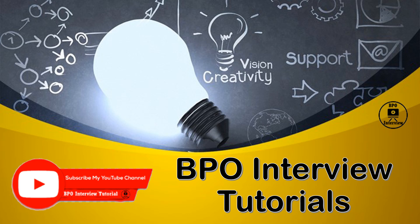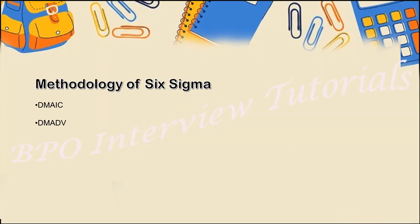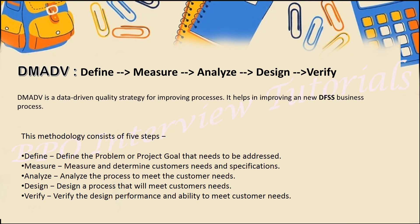Let's start with today's concept. We have already discussed the Six Sigma methodology, wherein there are two types: the first is DMAIC, which we have already discussed, and the other is DMADV. Today we will be looking at DMADV — what it is, why we use it, and its definition. DMADV means Define, Measure, Analyze, Design, and Verify. DMADV is also a data-driven approach that basically works on the basis of data, and it helps us with a new process.